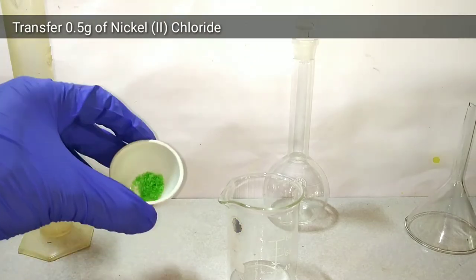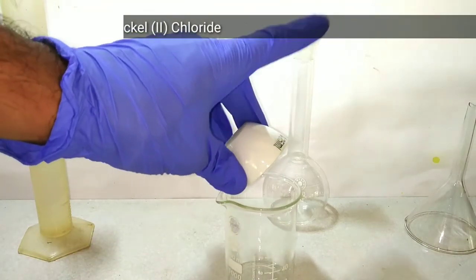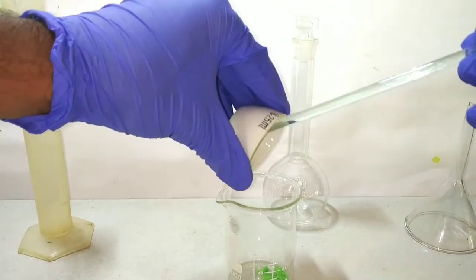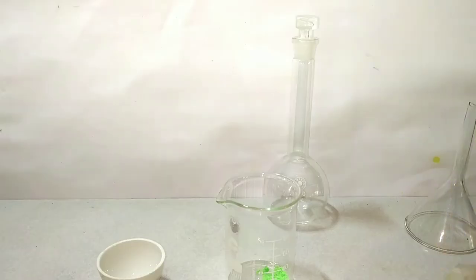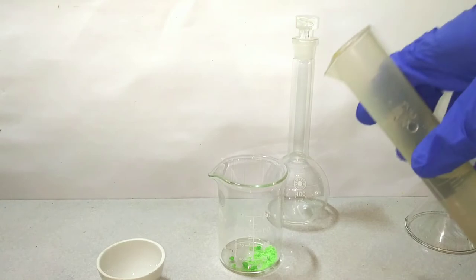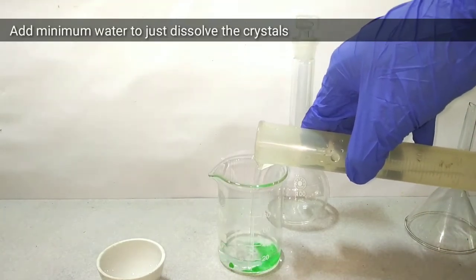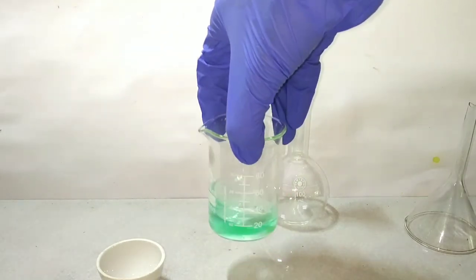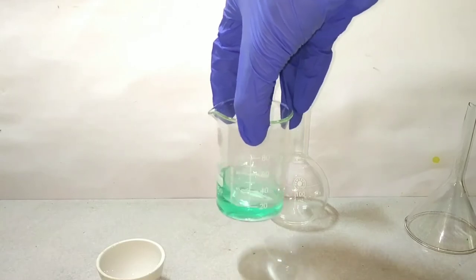First of all, transfer 0.5 grams of pre-measured nickel chloride into a clean and dry 100 milliliter beaker. Keep aside that glass rod and dish because we will be needing them later. Now add minimum amount of distilled water just to dissolve the crystals. Nickel 2 chloride, being a transition metal salt, has a green color due to partially filled D subshell.